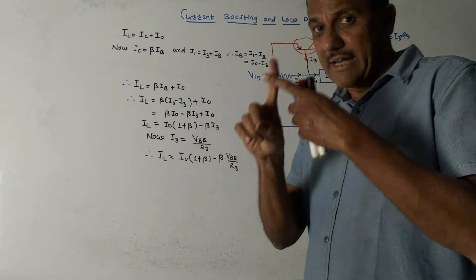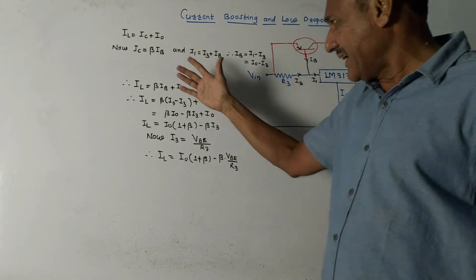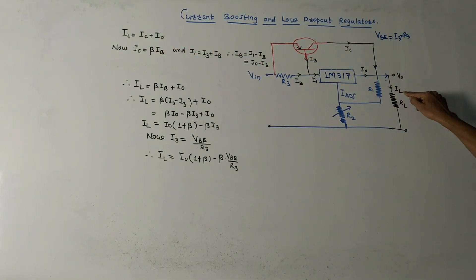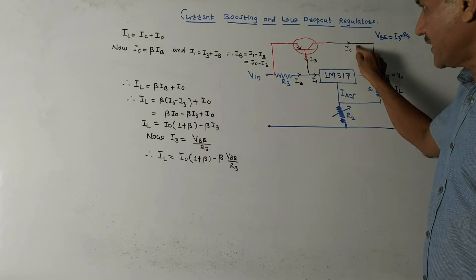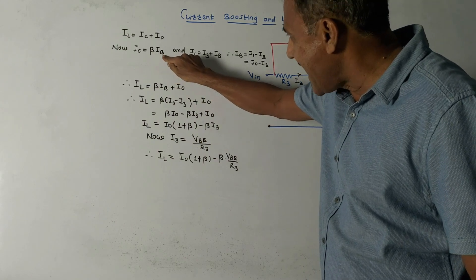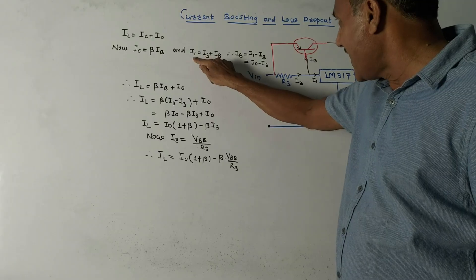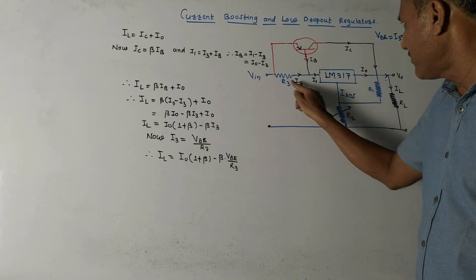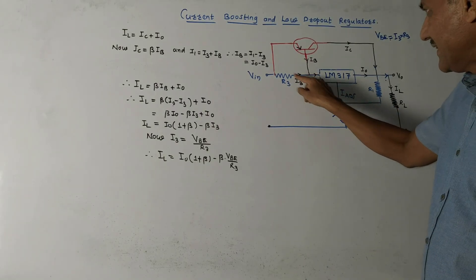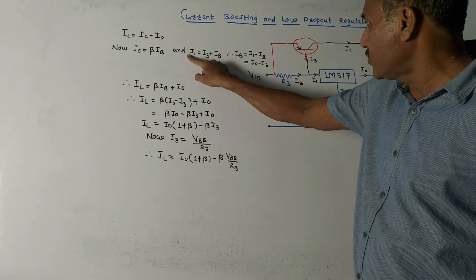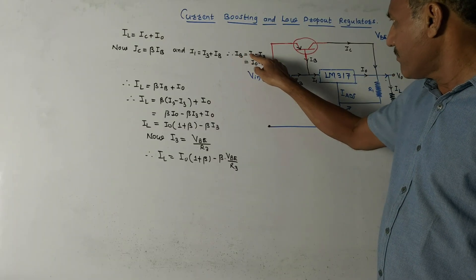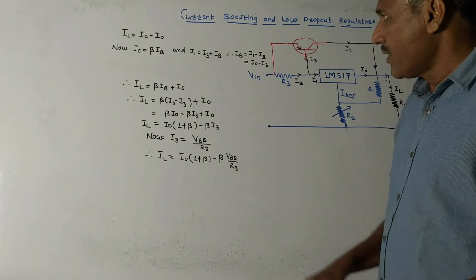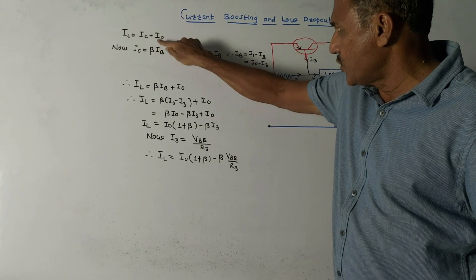Now consider the second case: if the load current increases and we need to boost the current, this transistor should be switched on. The mathematical analysis is as follows. First equation: IL = IC + I0. IC is the collector current of the transistor, and using the standard formula IC = β × IB. Also, I1 = IB + I3, therefore IB = I1 − I3.